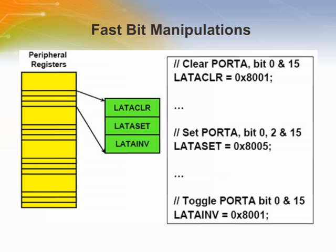When you write to any of the SET, CLR, or INV registers, the underlying hardware performs the read-modify-write operation in a single clock. This hardware assistance not only accelerates the bit manipulation, but it also provides atomicity. This means that the Set, Clear, and Invert operations cannot be interrupted. This automatic bit manipulation capability simplifies the programming logic — you don't have to guard your I/O bit manipulation logic with interrupt disable and enable sequences, or worry about read-modify-write problems of I/O ports.